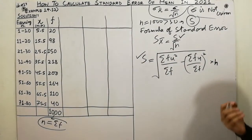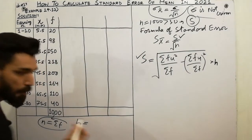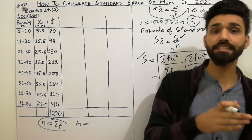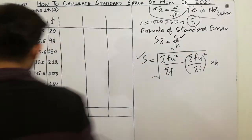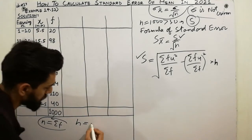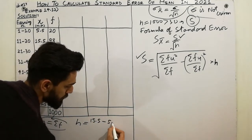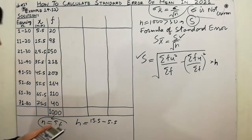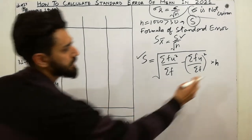H is the class interval — the difference between the upper class boundary and lower class boundary, as I already discussed in my last lecture. Class interval is: upper class boundary 15.5 minus lower class boundary 5.5, which gives 10. So the class interval is 10.